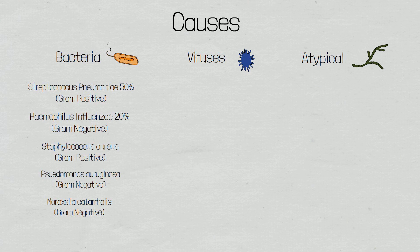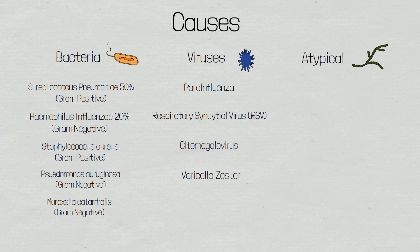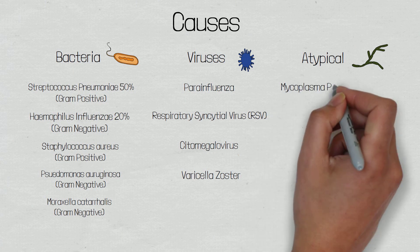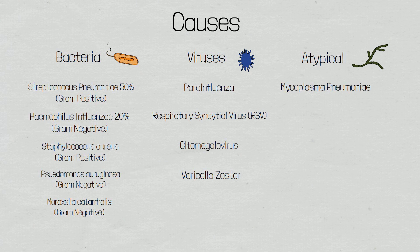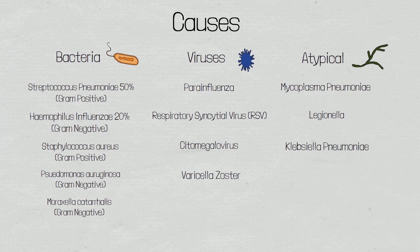The most common viral causes include the parainfluenza virus, the respiratory syncytial virus (RSV), the cytomegalovirus, and the varicella zoster virus. Atypical pneumonia can be caused by Mycoplasma pneumoniae — a bacterium most commonly seen in young adults causing a mild pneumonia, also called walking pneumonia. These patients will have mild symptoms but may present with neurological features. Legionella is a gram-negative bacterium found in contaminated water, spread through things such as air conditioning units. Klebsiella pneumoniae is present within the GI system and is most commonly seen in aspiration pneumonia.